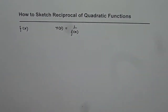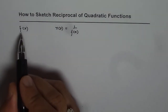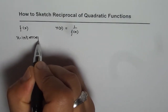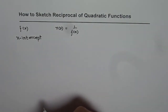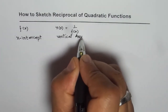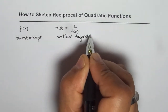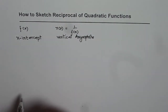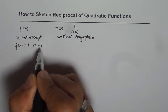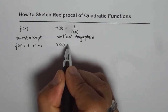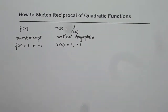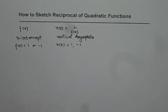There are a few characteristics we observe. For an x-intercept in f of x, what happens in the reciprocal function? We get a vertical asymptote. Second, if f of x equals 1 or minus 1, then r of x is also equal to 1 or minus 1. These are invariant points — they don't vary, they are common between the two graphs.